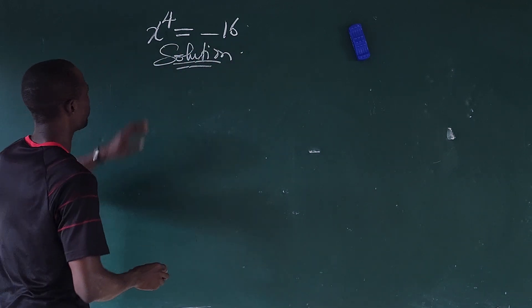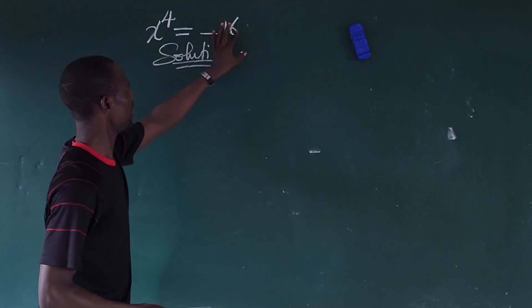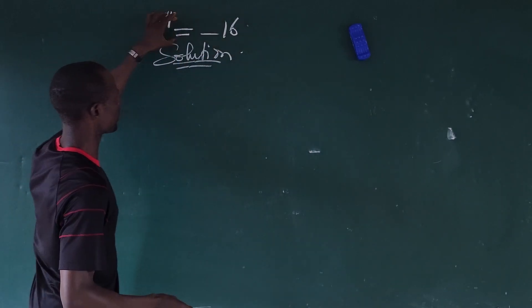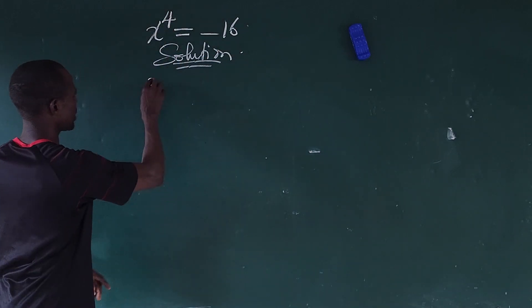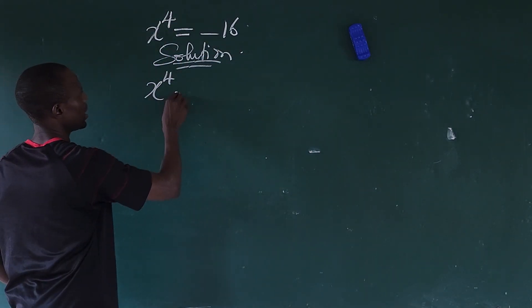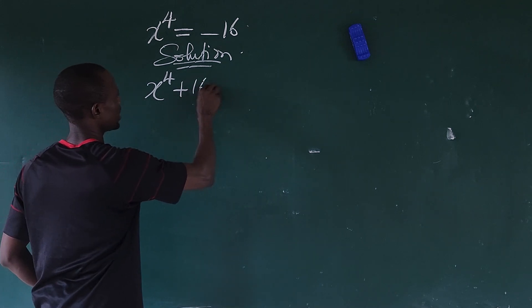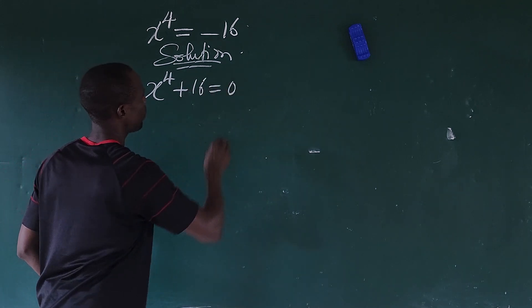The first thing to do here is to move the minus 16 to the left side. This will now become x to the power of 4 plus 16 equal to zero.